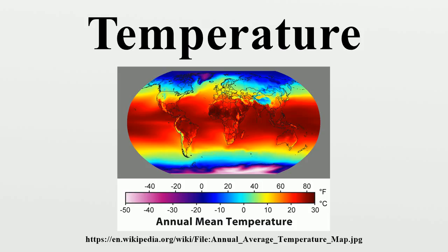Both at sea-level atmospheric pressure. Because of the 100-degree interval, it is called a centigrade scale. Since the standardization of the Kelvin in the international system of units, it has subsequently been redefined in terms of the equivalent fixing points on the Kelvin scale, so that a temperature increment of one degree Celsius is the same as an increment of one Kelvin, though they differ by an additive offset of 273.15. The United States commonly uses the Fahrenheit scale, on which water freezes at 32 degrees Fahrenheit and boils at 212 degrees Fahrenheit at sea-level atmospheric pressure.